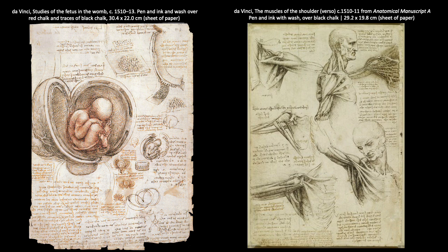He used his anatomical studies to enhance his portrayals of the exterior of the human body in his artworks, and was one of the first to study the fetus in the womb, as seen on the left here. The church had banned acts considered to desecrate the body, including dissection. However, da Vinci got away with it — perhaps because of his highly methodical practices, or because the church was looking to his sketches for evidence about how the human soul resides within the body. Either way, these studies have been used and admired by artists for centuries.